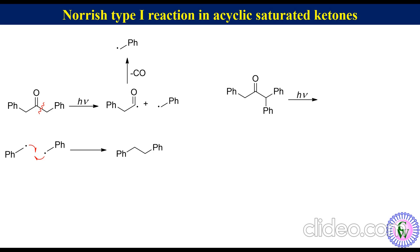For an unsymmetrical ketone, upon irradiation the right-side sigma bond alpha to carbonyl gets cleaved, as the diphenylmethyl radical is more stable than the benzyl radical. The acyl radical immediately loses carbon monoxide to produce a benzyl radical. Here both alkyl radicals are different and don't have propensity for disproportionation, so they just combine together to produce an alkane.